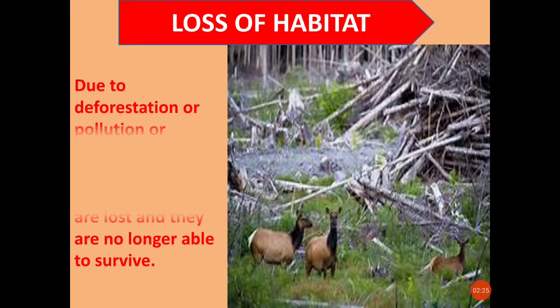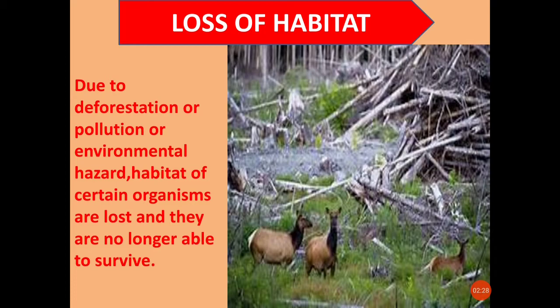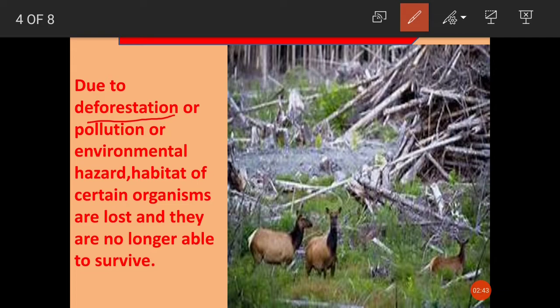First of all, loss of habitat. Loss of habitat occurs when an environment is altered — due to deforestation, pollution, or environmental hazard. You can see here that due to these factors, environments are altered so much that many endemic species lose their habitat and are no longer able to survive.